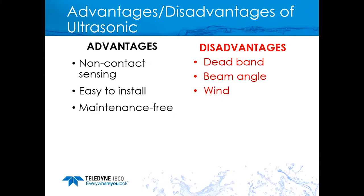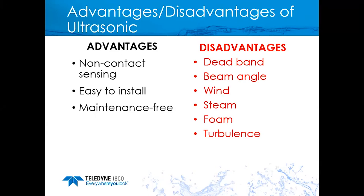Wind can also be a factor because we're transmitting a sound wave that can be blown away, reducing signal strength. Steam can be an issue as it bounces off micro water particles in the air, potentially reflecting in the deadband or giving a false signal. Foam can absorb the ultrasonic signal so it may not reach the surface — if you have foaming in your channel, an ultrasonic would not be a good option. Turbulence is also an issue since ultrasonics need a flat, smooth surface for a return echo; turbulence disperses the sound wave, giving reduced or no signal.